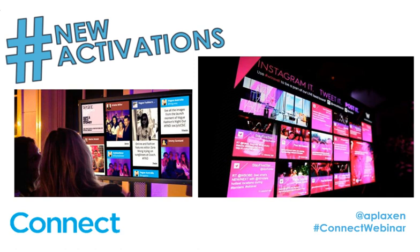Tweet walls are another great option. People love to see their tweets posted up with their profile pictures — it's why people want to be on the jumbotron at a sports game. In fact, I've seen people take selfies of their selfie on a tweet wall. You can have your sponsors' logos all over the tweet wall, with 'sponsored by so-and-so.' You can also have your sponsors be the ones controlling the tweet wall — meaning approving posts — because sometimes there are posts you don't want up there and someone needs to manage that.